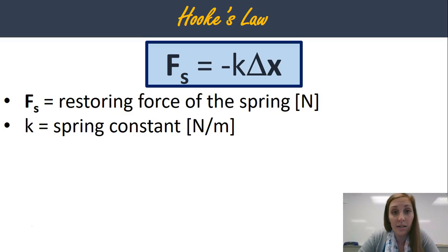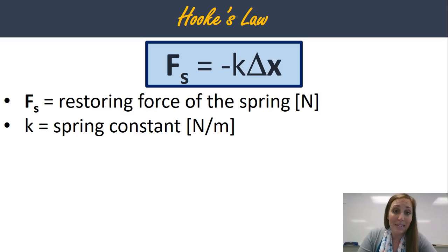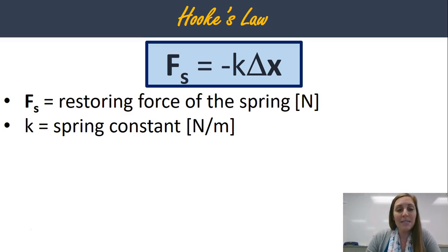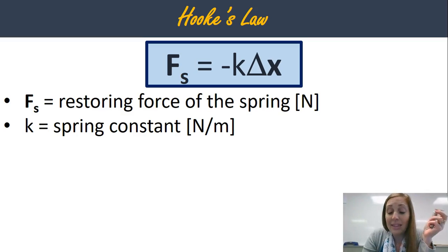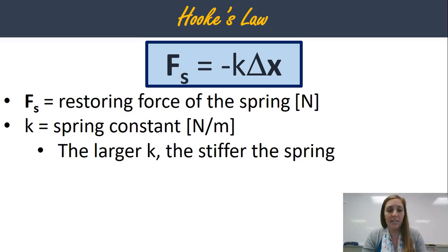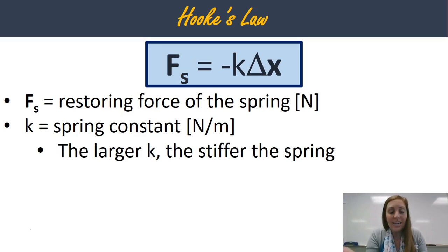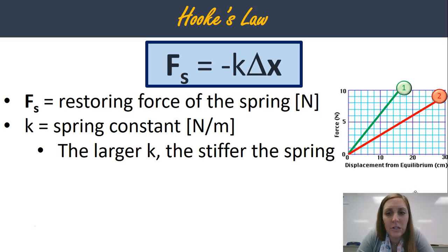K is the spring constant, and this is measured in newtons per meter. This is going to be specific for any specific spring. We saw that this spring didn't stretch as much as this one, and that's because they have different spring constants. The larger the k, or the larger the spring constant, the stiffer the spring.